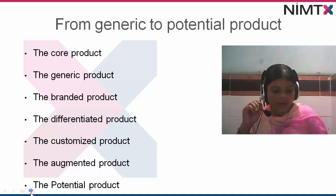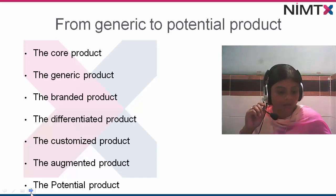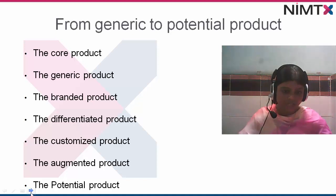A branded product gets an identity through a name — like Modern Bread or Harvest. These are examples of branded products. So these are the categorizations of a product.